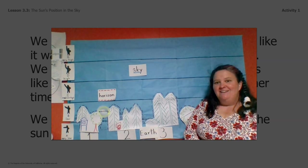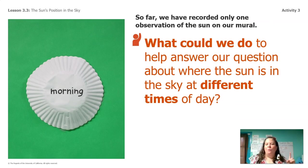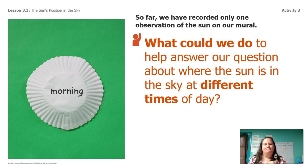Do we have enough data now? Let's think about the question we've been investigating: where is the sun in the sky at different times? We know one time — morning — so where was the sun in the sky during the morning? We know now, right? But we need more. What can we do to help answer our question about where the sun is at different times of day? I'm sure some of you said we should go out and make observations at different times of day — and that's exactly what we're going to do.